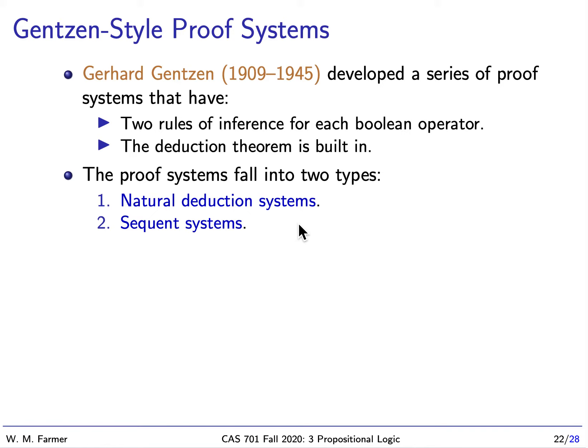Today we're going to talk about another style of proof system called Gentzen-style proof systems. These are named after Gerhard Gentzen who developed a series of proof systems that have two rules of inference for each Boolean operator and the deduction theorem is built in. The proof systems are of two types, natural deduction systems and sequent systems. We're going to focus on sequent systems.